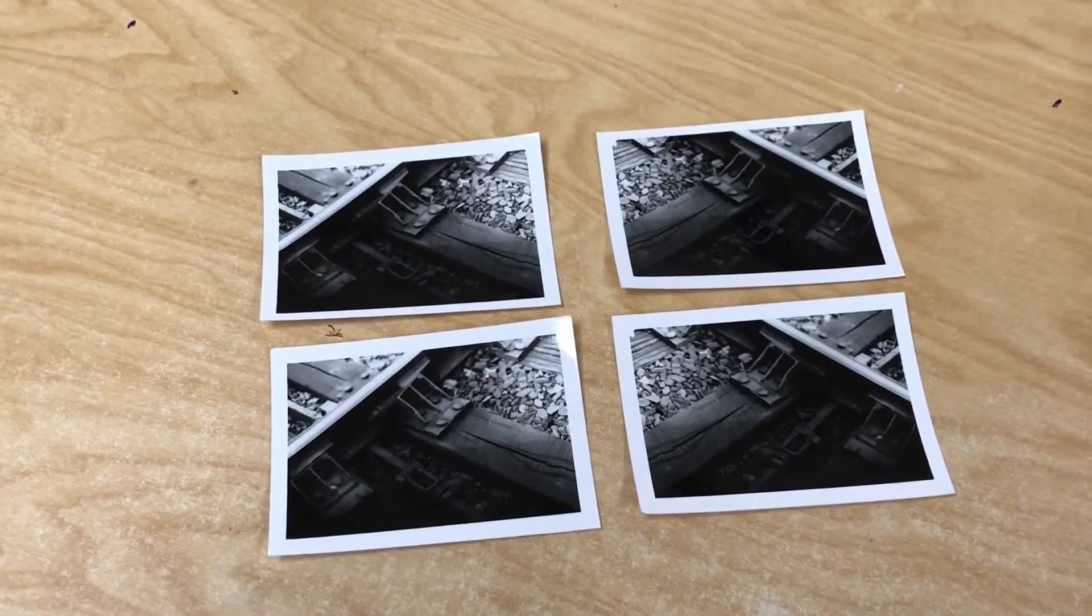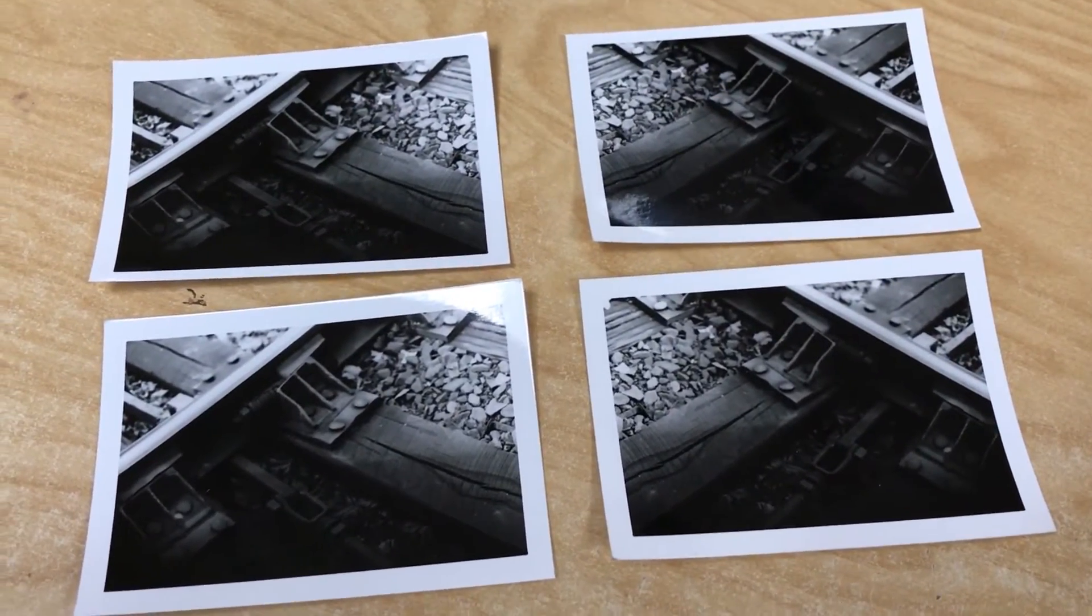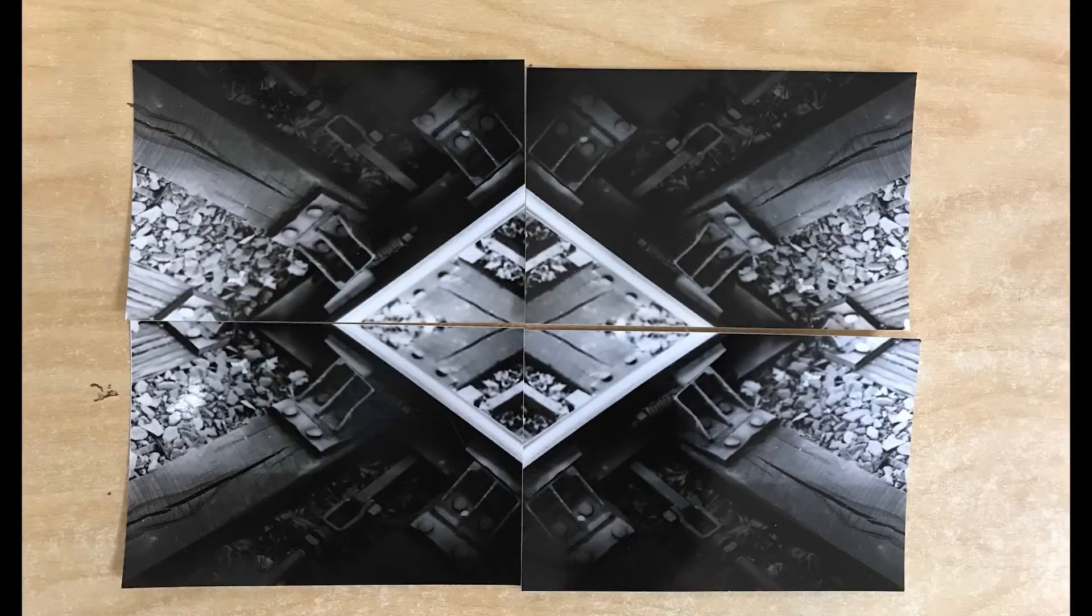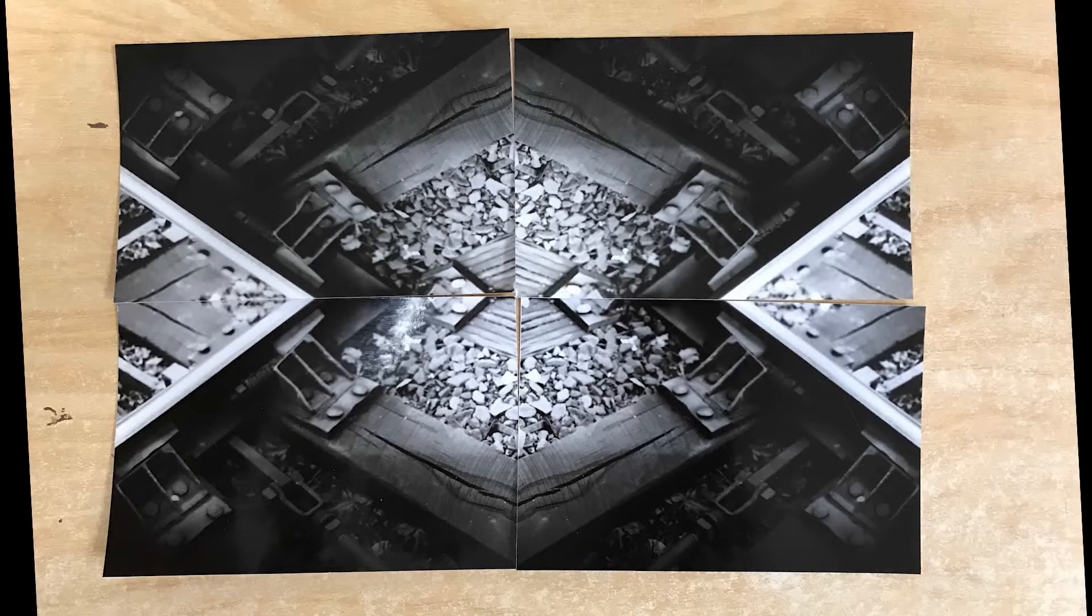These are the four prints you should have. Two proper and two backwards. Trim the white edges off and then figure out which part you're going to have meet in the middle. You should have four options. These are mine.